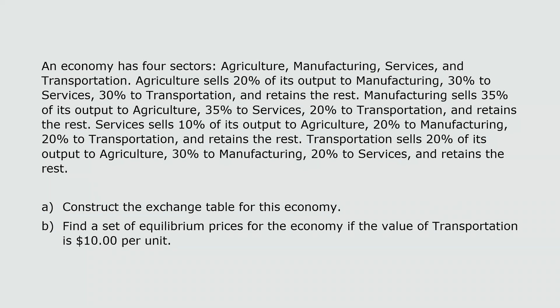Here's our problem. An economy has four sectors: agriculture, manufacturing, services, and transportation. Agriculture sells 20% of its output to manufacturing, 30% to services, 30% to transportation, and retains the rest. Manufacturing sells 35% of its output to agriculture, 35% to services, 20% to transportation, and retains the rest. Services sells 10% of its output to agriculture, 20% to manufacturing, 20% to transportation, 20% to services, and retains the rest. We are asked to construct the exchange table for this economy, and then find a set of equilibrium prices if the value of transportation is $10 per unit.